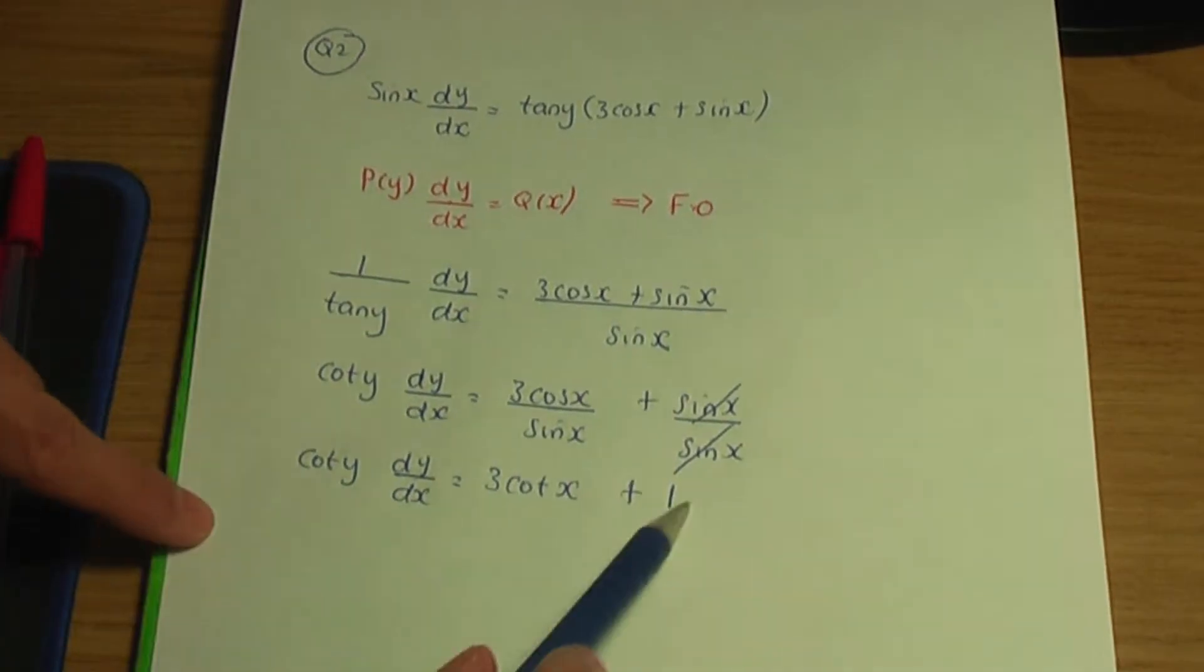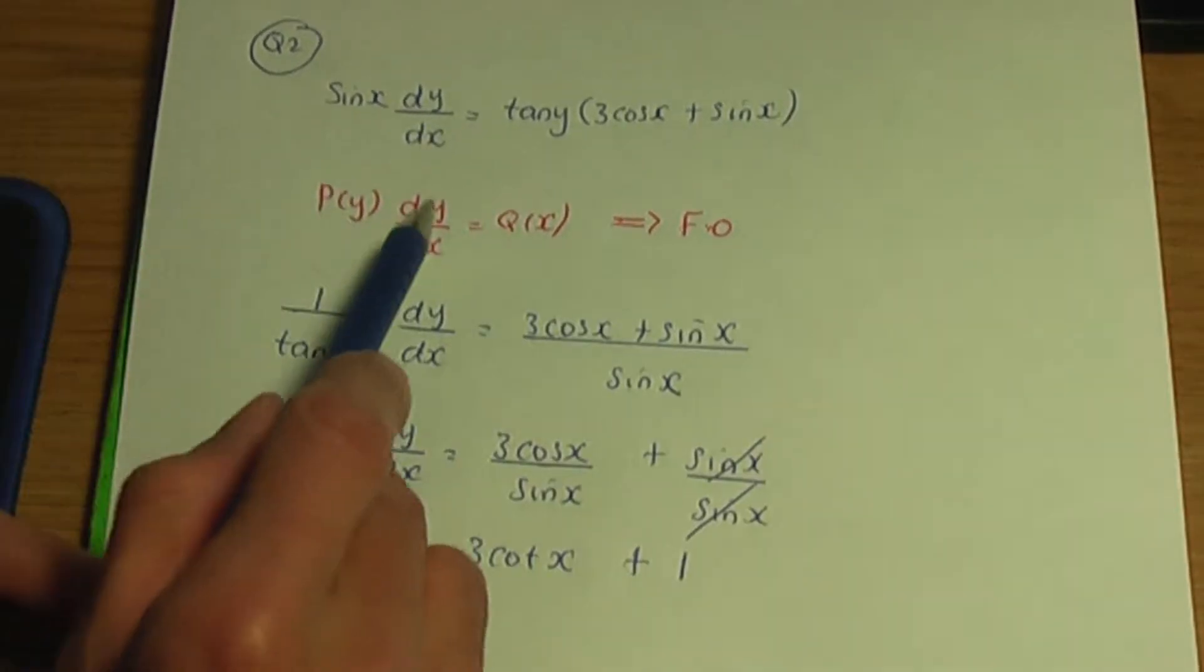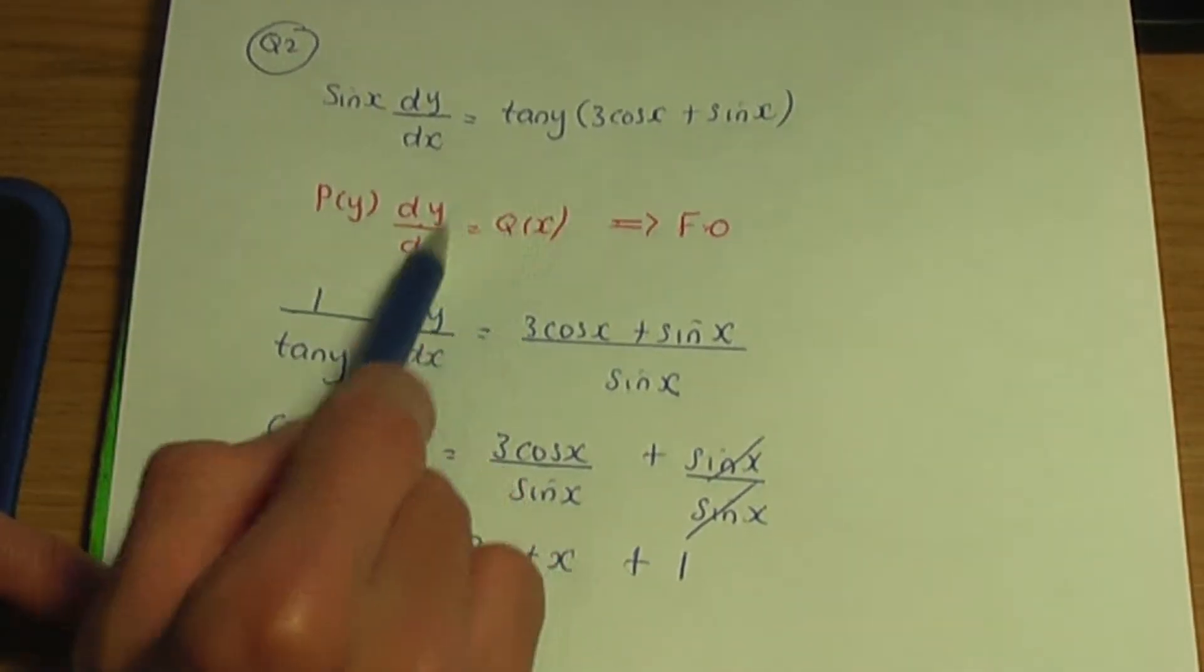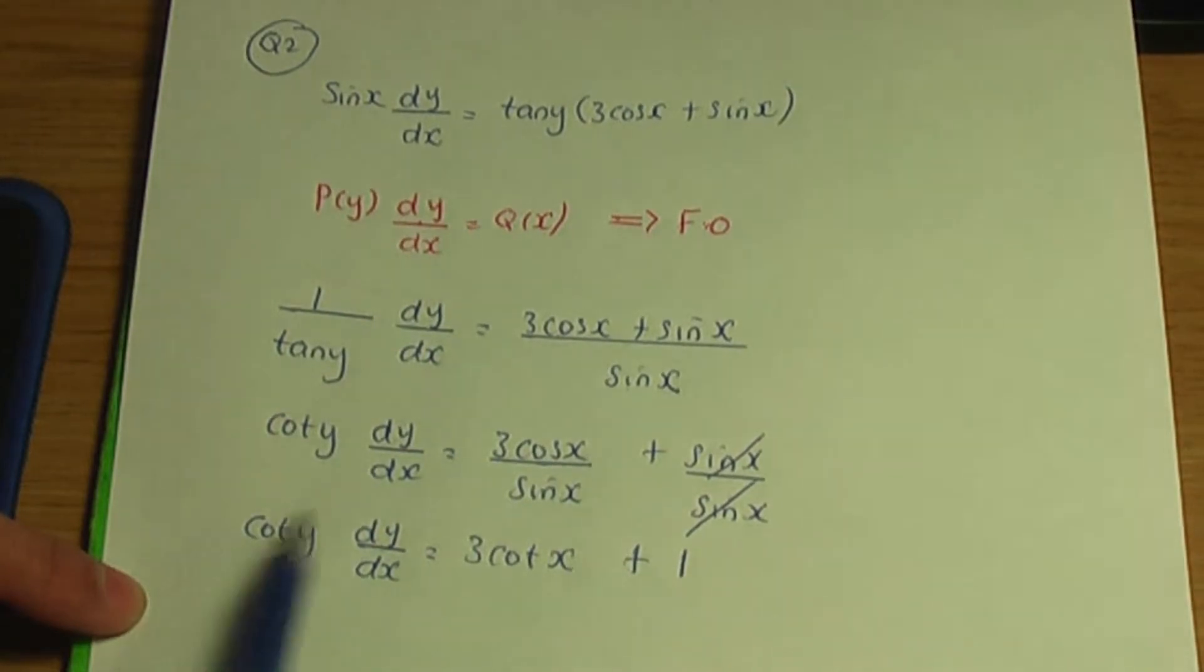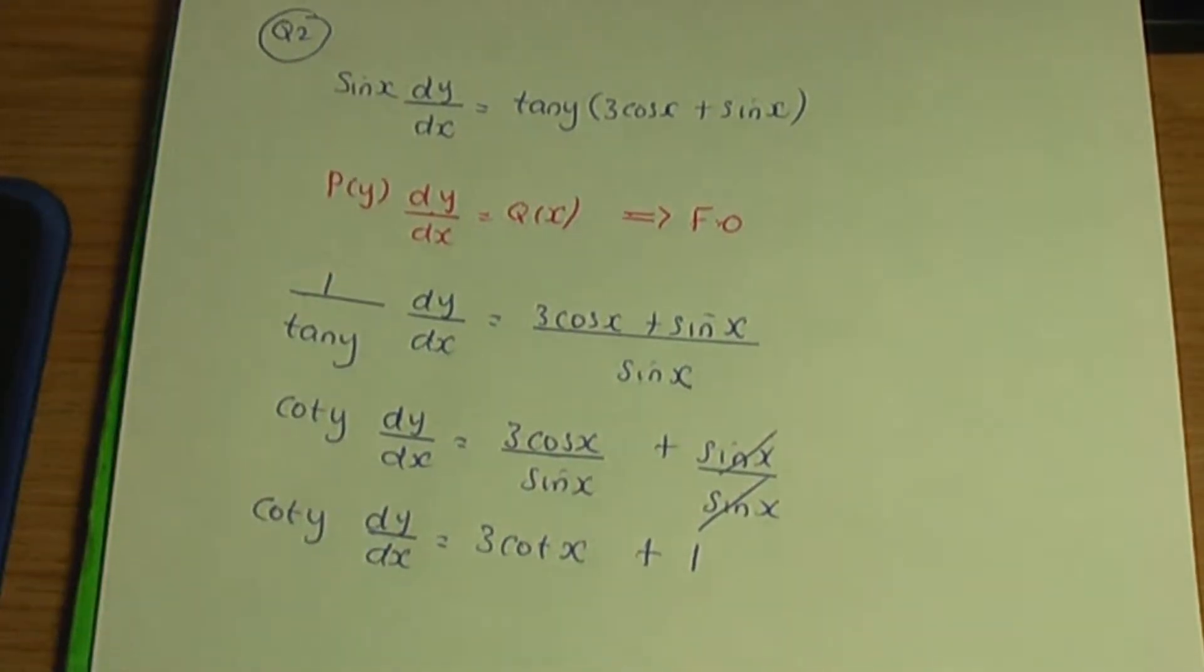Now, if we make an observation here, this equation is of the form p(y) dy over dx equals q(x). So that would make this equation in our question first order.